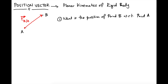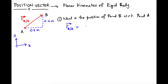We can represent the position with this triangle here — let's say 0.3 meters and 0.4 meters. We define our coordinate system as positive to the right for the x-direction and positive going up for the y-axis. So r_B/A has a 0.3 component in x pointing this way, and it also has a component in y pointing up.